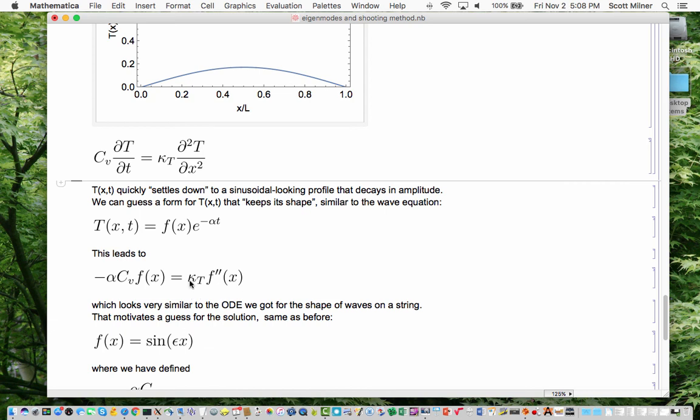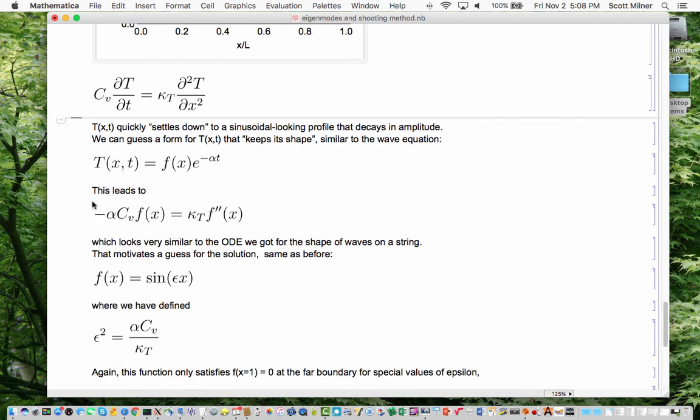We got basically an equation like this with just some of the names changed. if you pull kappa t over here and define that to be epsilon squared in fact it's exactly the equation we got for the eigenmodes of a string and that motivates a guess just as before of sine epsilon x for the very same reason because it's the same equation.